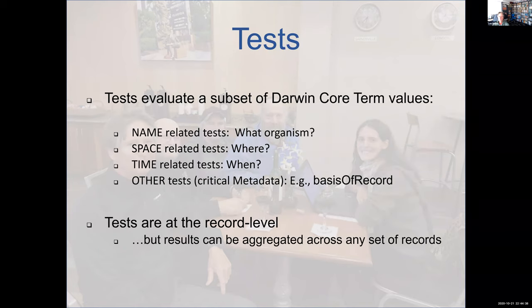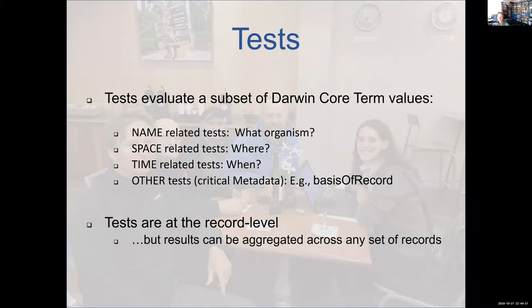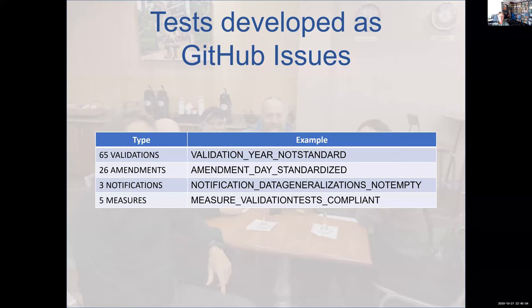The tests are based upon Darwin Core terms, or at least a subset of them. We have name-related tests, space, time, and what we call other — in other words, what's the organism, where is it, when is it? The other category includes things like license or basis of record. The tests are all at the record level, but the results can be aggregated across any multiple set of records, so it's quite flexible. We have 99 tests — that number has gone up and down a little. There are a whole bunch of supplementary tests we've put aside, because we are focused on a fundamental core set which we think are widely applicable.